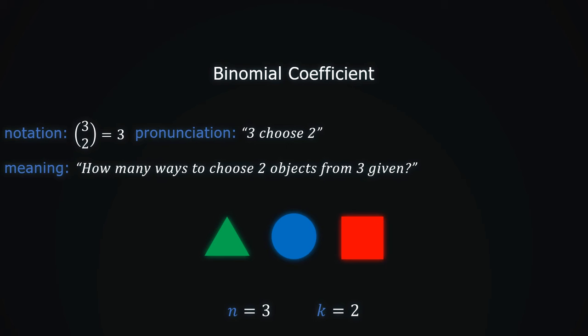We notice how the order is not important. It doesn't matter whether we take a triangle and a circle, or a circle and a triangle. It only matters what we have taken.